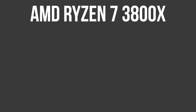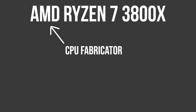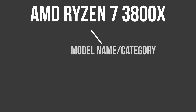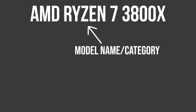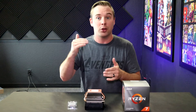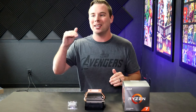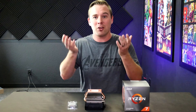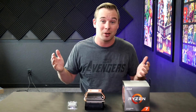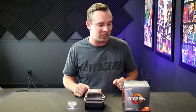Let's break that down. AMD is the company that makes the CPU. Ryzen 7 is just a category — each range of CPUs has a number to it: Ryzen 3, Ryzen 5, Ryzen 7, Ryzen 9. Higher the number, the better the CPU — and also the more expensive the CPU.